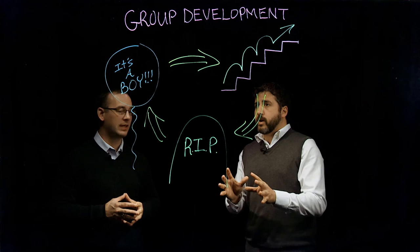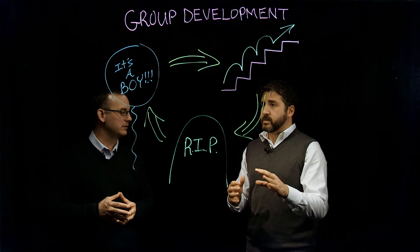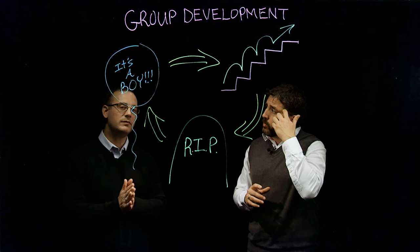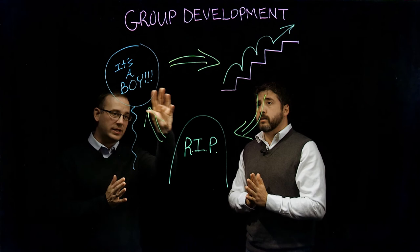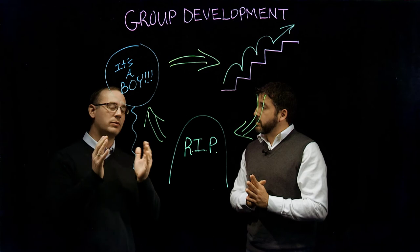Before we move on here, what are some potential drawbacks? You did a nice job talking about in Tuckman's model maybe some of the strengths and some of the areas that needed improvement. What would you say for this one—what have been some of the detractors to this one?